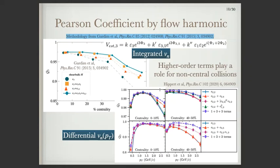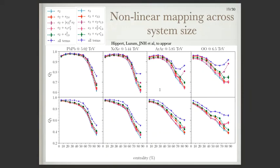What about nonlinear mapping across system size? This is work from the Extreme Collaboration — Matt, Maurice, Hyper and others — comparing lead-lead, xenon-xenon, argon-argon, and oxygen-oxygen, and looking at how good the linear mapping is. For lead-lead looking at V2, it looks pretty good, though V3 starts breaking down a little. Xenon still does a decent job, but once you get to argon-argon you already see a lot of nonlinear effects, and oxygen-oxygen has even more nonlinear effects. The point is: for light ions it's not good enough to just look at eccentricities alone unless you do the full nonlinear mapping. You really have to run full hydrodynamics.